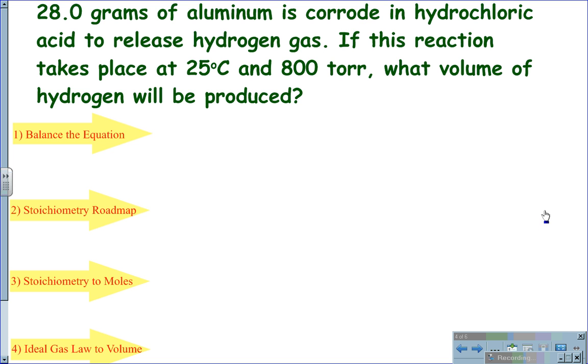However, in the case of 28 grams of aluminum corroding in hydrochloric acid to release hydrogen gas, if this reaction takes place at 25 degrees Celsius and 800 torr, what volume of hydrogen will be produced? We see that this is at 25 degrees Celsius and 800 torr, not STP.